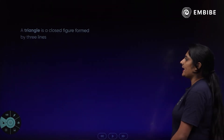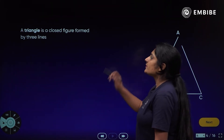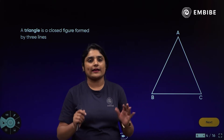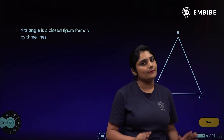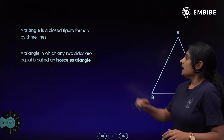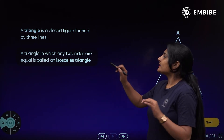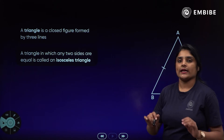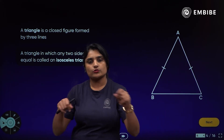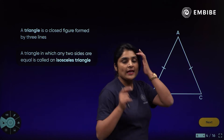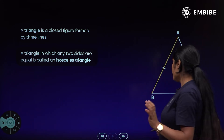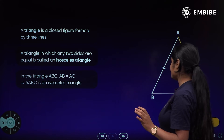A triangle is a closed figure formed by 3 lines. The triangle in which any two sides are equal is called the isosceles triangle — aysa triangle jismin koji bhi 2 sides equal holti hai, usko hum isosceles triangle bolte hai.